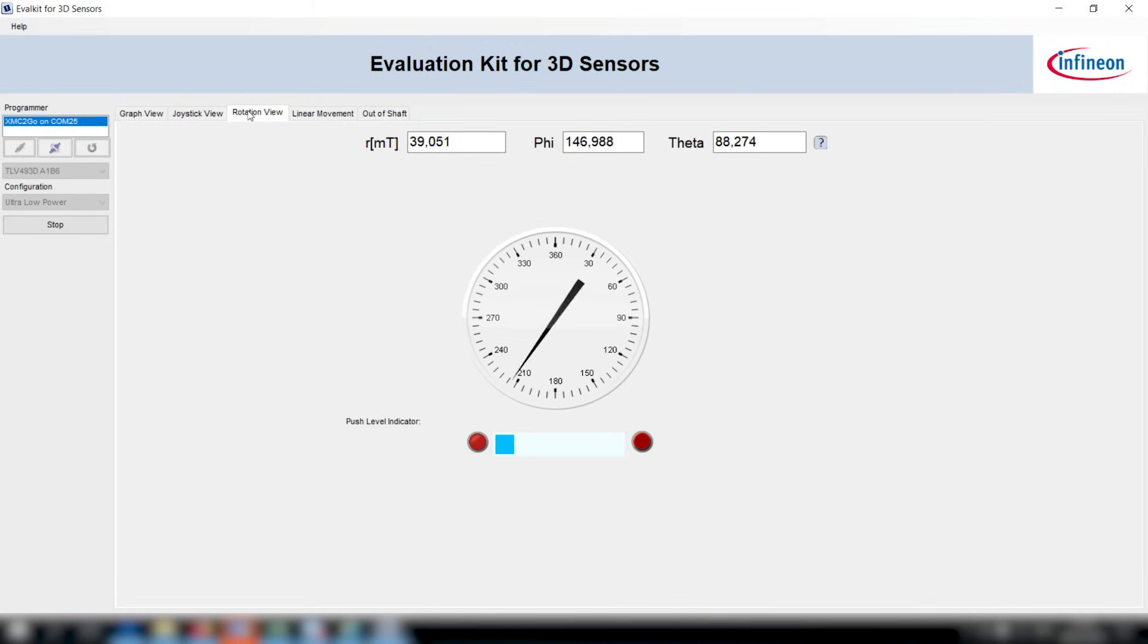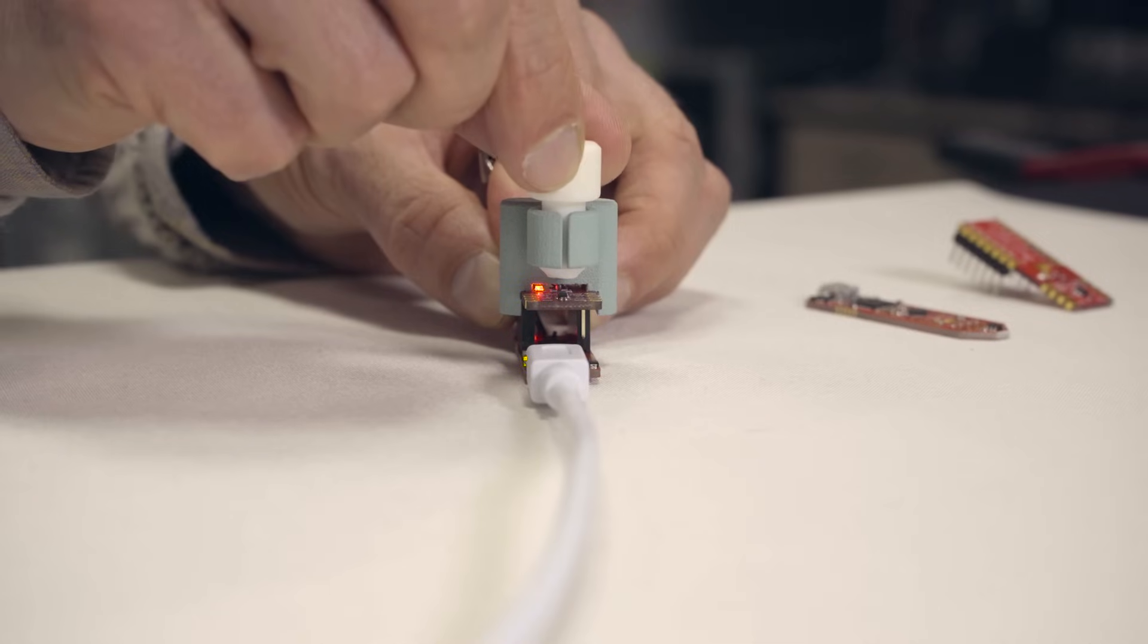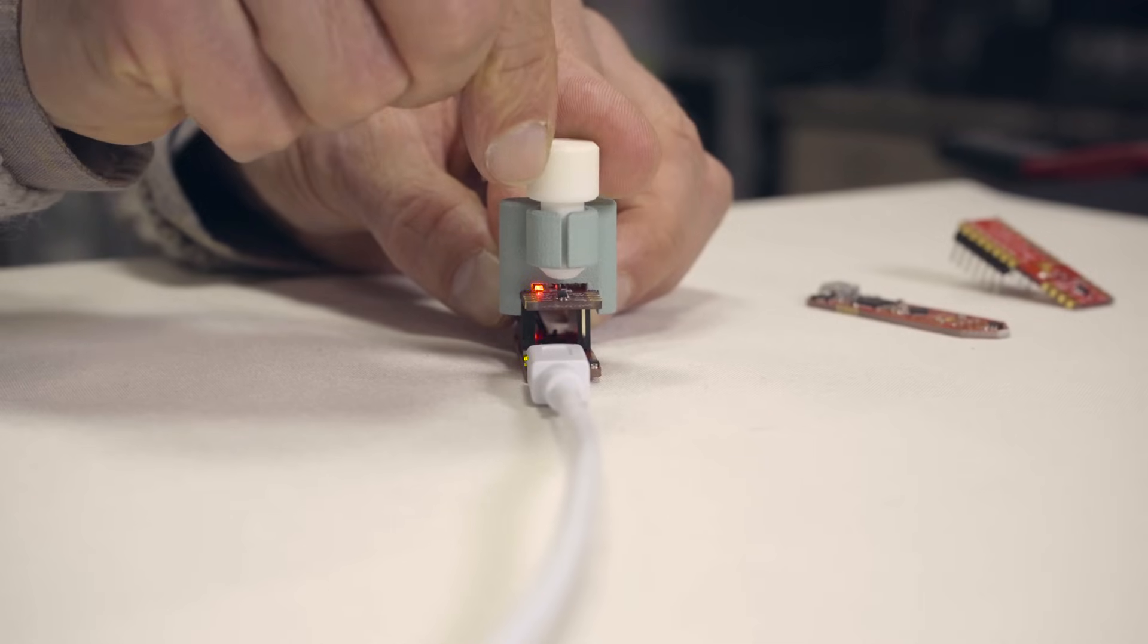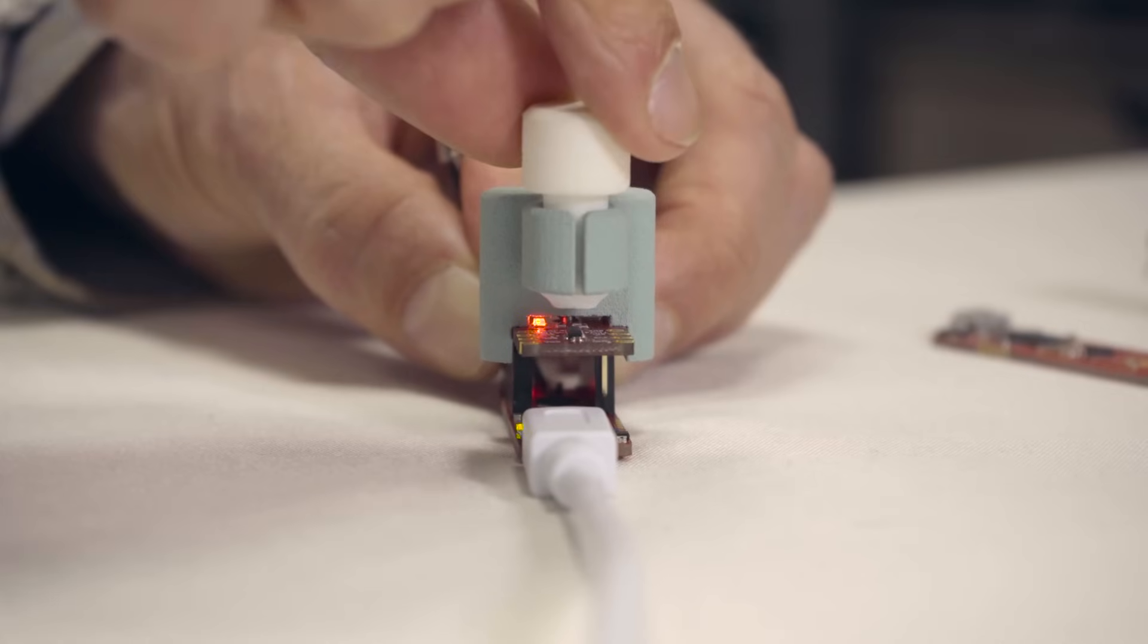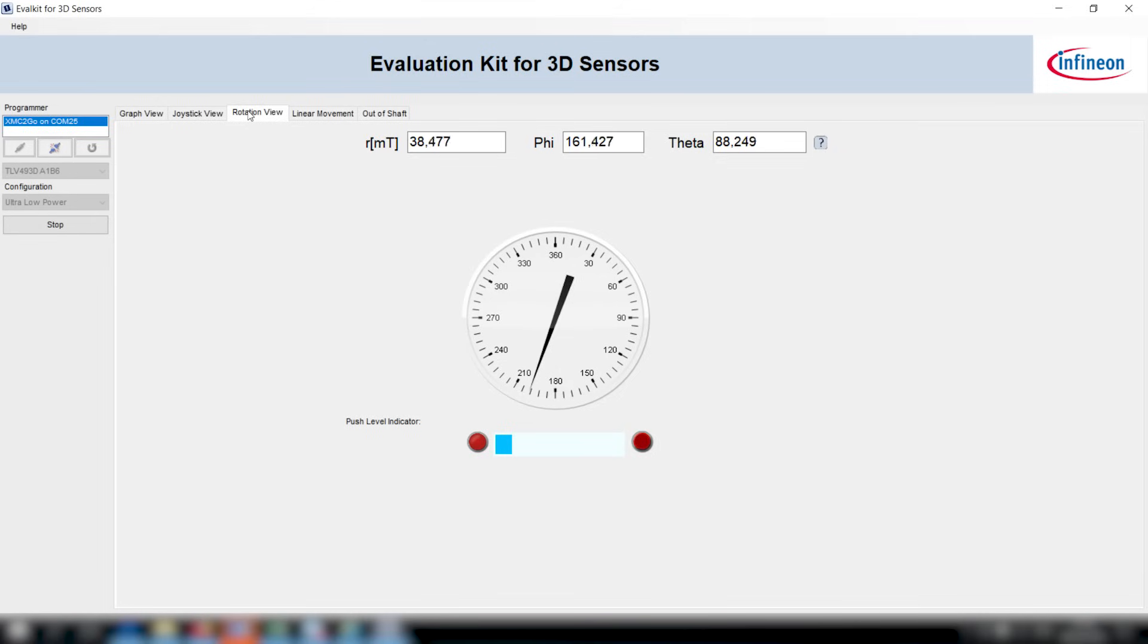Now I can check here the rotation view, and you can see here that if I rotate here this knob, you can see the detected angle. On the blue bar, you see whether the button is pushed or not at this push level indicator. This GUI works as well with the 3D kit and with the microcontroller and an additional shield to go.